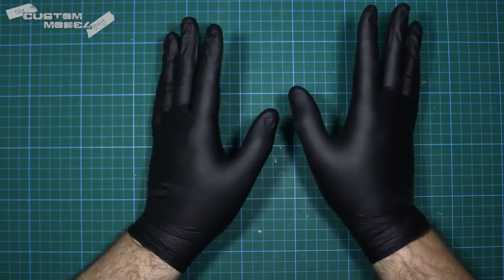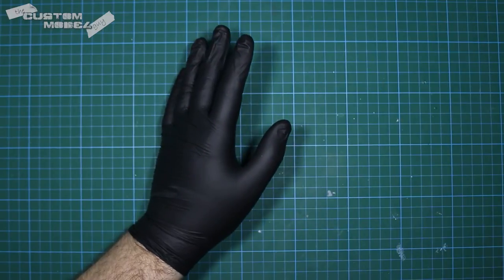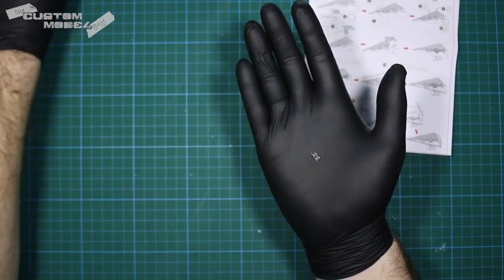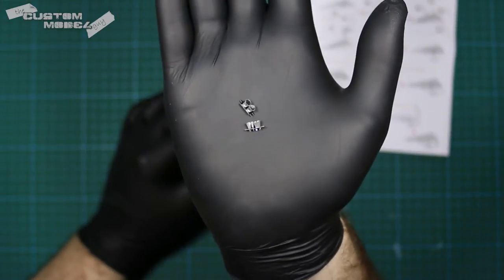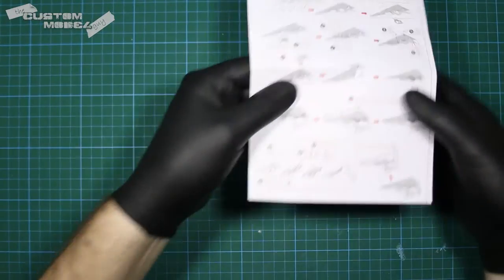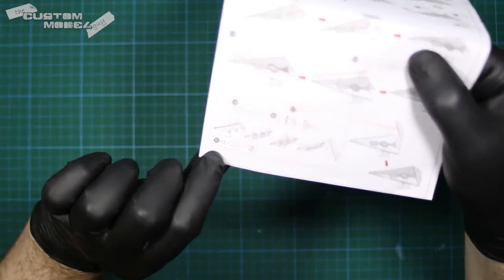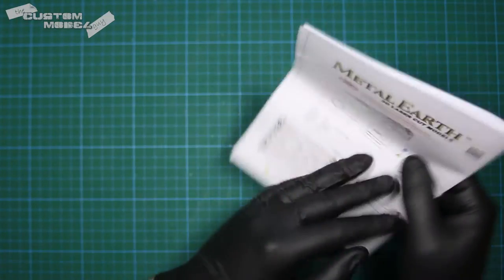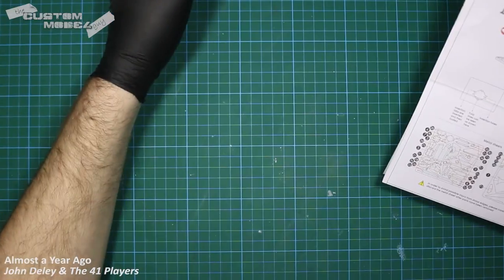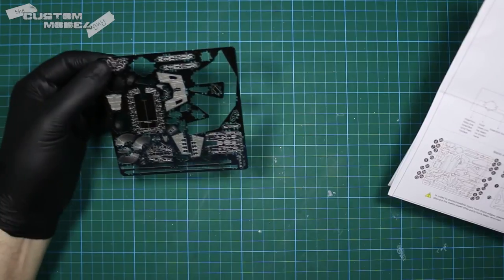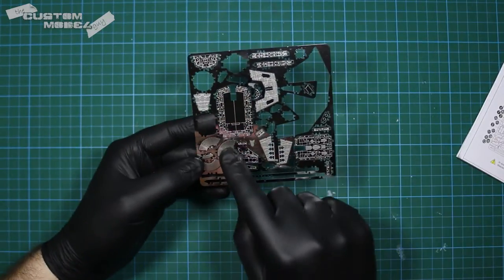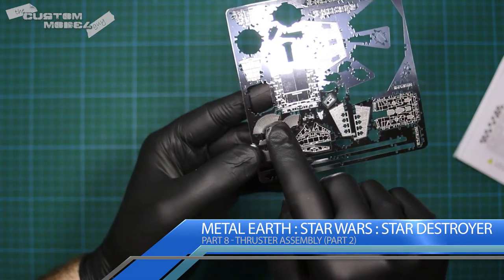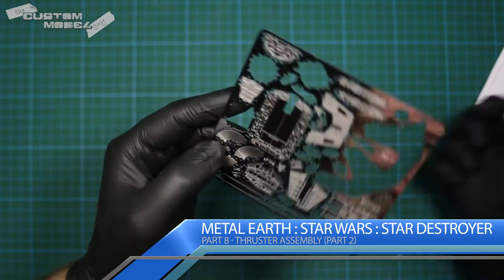With those things sorted out, we'll move on. If you remember, we were working on the thruster assembly. We had done the small thrusters, those are done. Now we need to work on the large, the three large thrusters. That is going to be part 15, which is going to be on this sheet here. It's those three large pieces there, the ones with the lines on them. Let's pop those out and make a start.